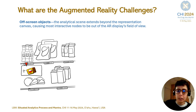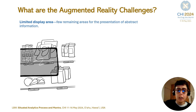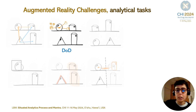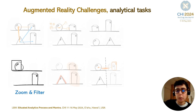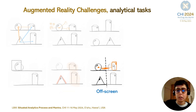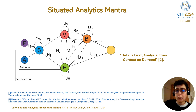The analytical scene extends beyond the representation canvas, causing most interactive nodes to be out of the AR field of view, leaving few remaining areas for abstract information representation. Consider that we need to perform analytical tasks in this challenging environment, such as relationship visualization for uncontrolled data node locations, or details on demand without occluding the real scene, or sort without rearranging physical objects, or zoom and filter without zooming or deleting from reality, or cluster without occluding real environment context, or off-scene visualization while keeping the spatial context relationship. So we introduced the adaptive mantra based on the requirements and challenges of situated analytics.